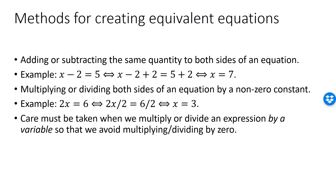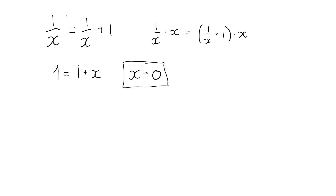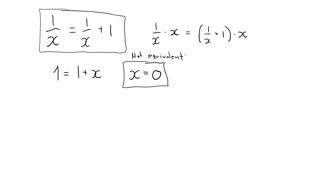We must be careful when multiplying or dividing both sides by a variable or expression, making sure it is not 0. For example, consider 1/x equals 1/(x+1). Multiplying both sides by x gives 1 equals 1 plus x, whose solution is x equals 0. However, this is not equivalent to the original equation since x equals 0 does not solve it. The two equations are only equivalent if x is different from 0, and if x is nonzero the second equation has no solution — which is also true for the first, since the right-hand side is always one unit above the left-hand side.